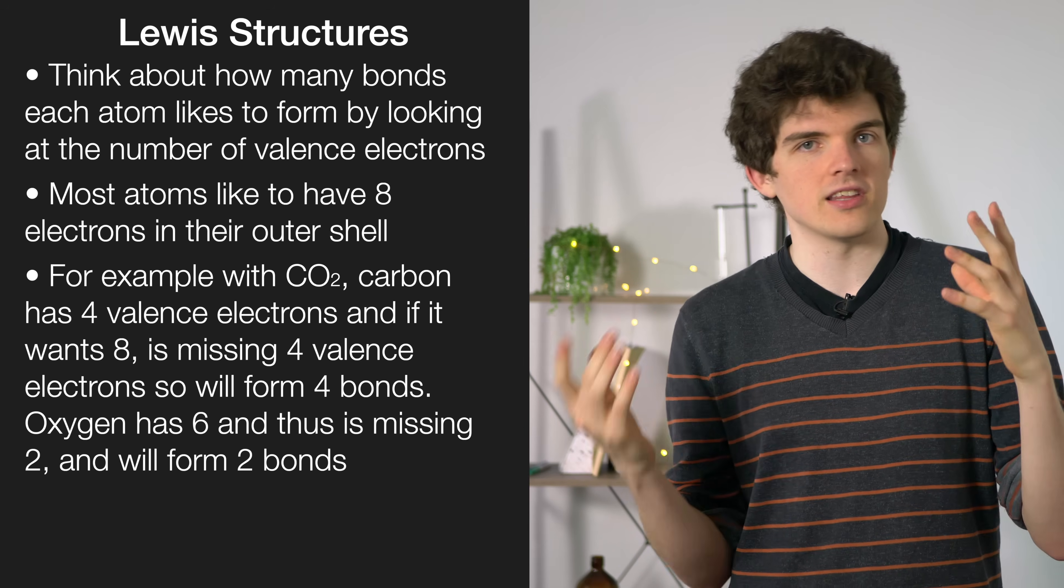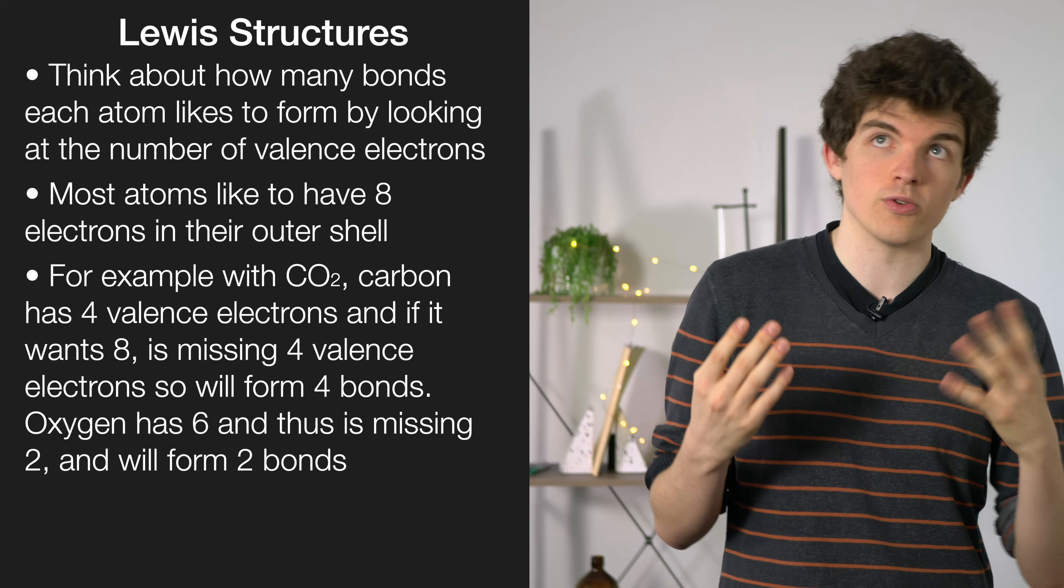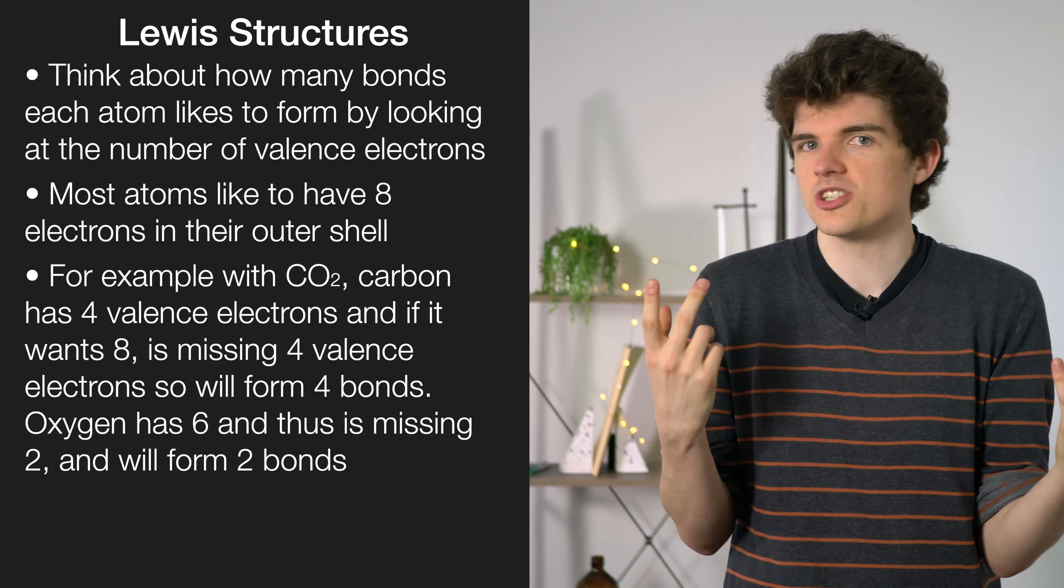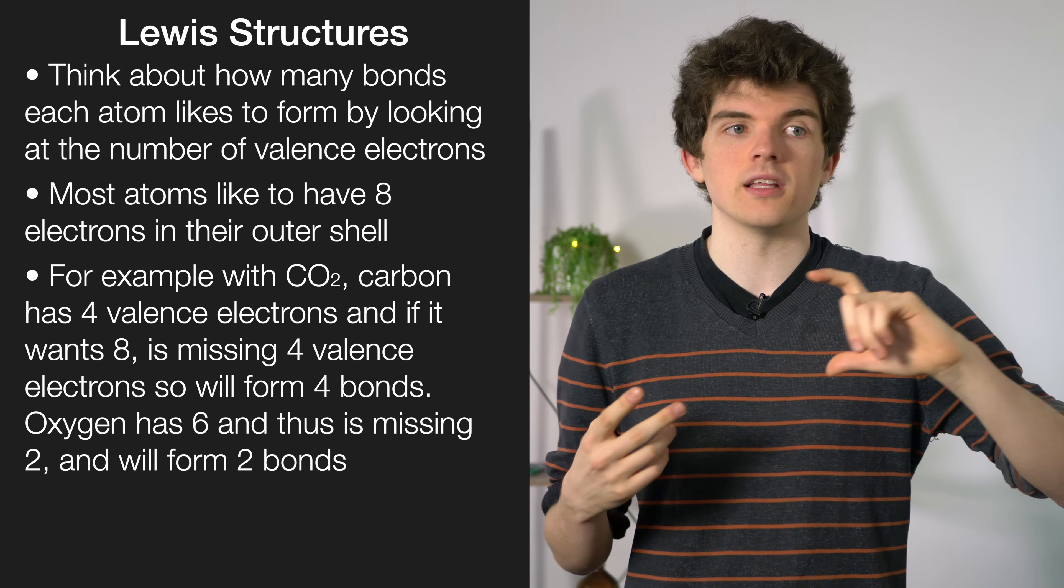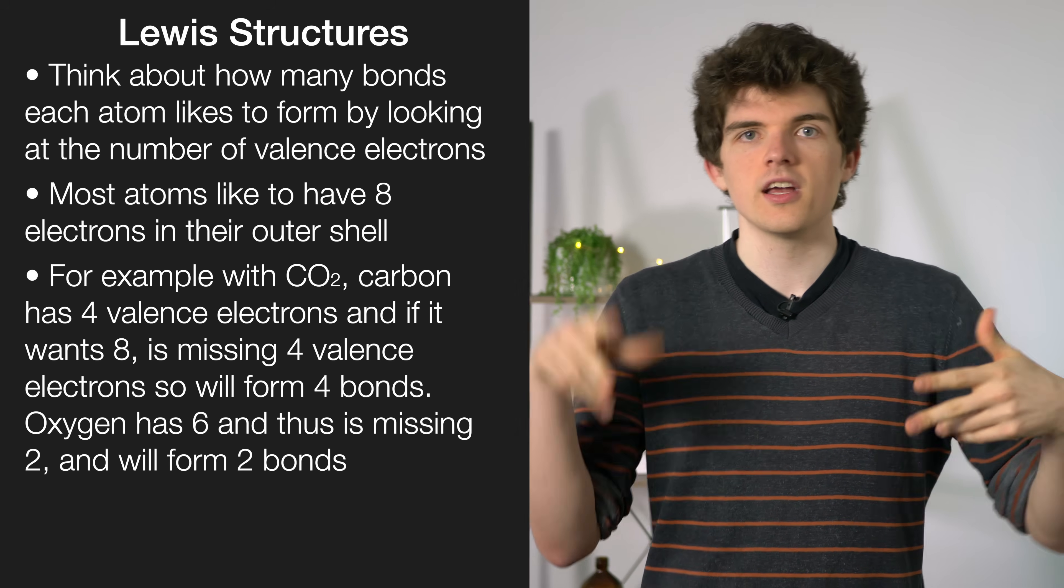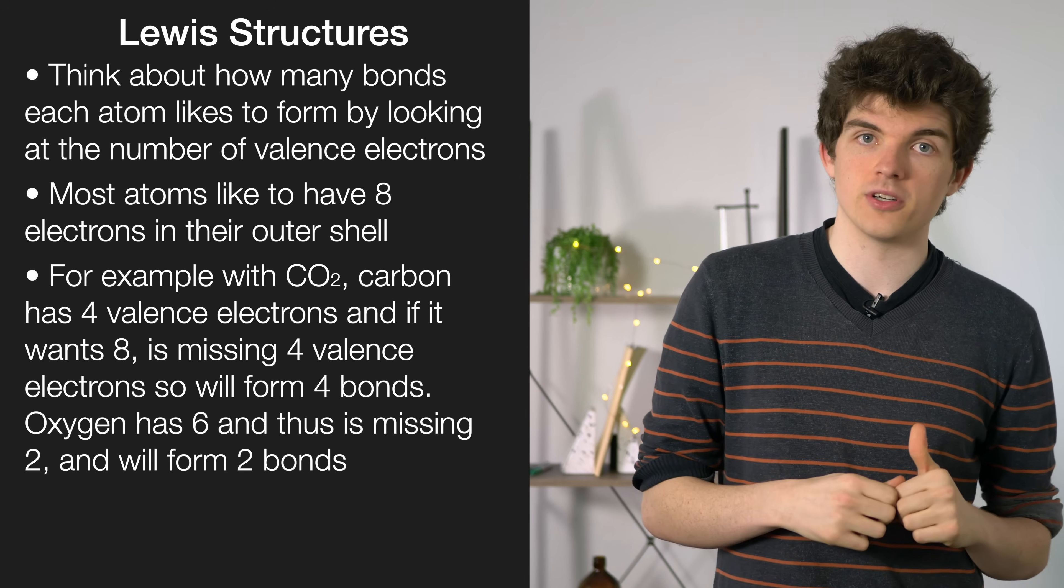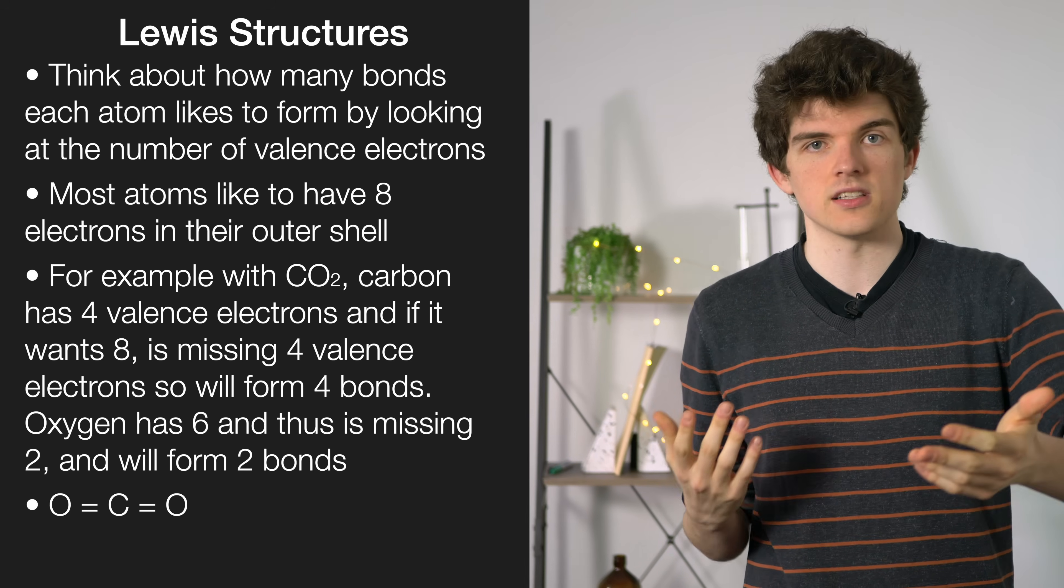If we put everything together, we have a carbon that likes to form four bonds and two oxygens that each like to form two bonds. From there it's pretty easy to see that the carbon's going to be in the middle because it needs to form the most bonds, and each oxygen is going to be doubly bonded to that central carbon so that everything is satisfied.